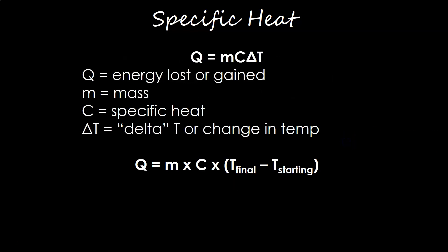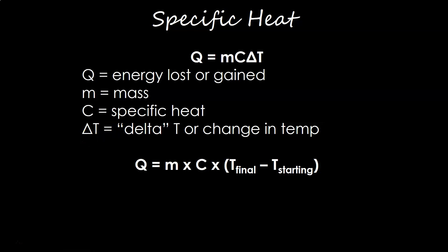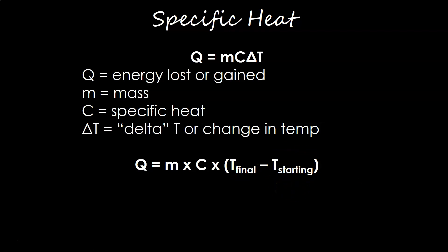The equation we use is called mcat — we say Q equals mcΔT. There's no 'a' but the delta symbol kind of looks like an 'a', so that's how we get that mnemonic. Q is the energy lost or gained, m is the mass of your sample, c is the specific heat for that material, and ΔT is the change in temperature — it can be going up or going down. Delta T is always final temperature minus starting temperature, so I'd write that down.